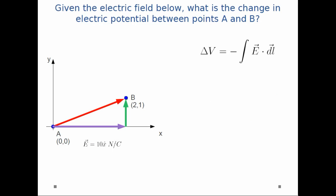Change in voltage is minus the path integral of E dot DL. I'm going to split my path up into two pieces: the purple path along X and the green path along Y.